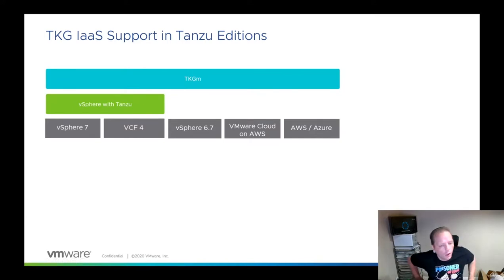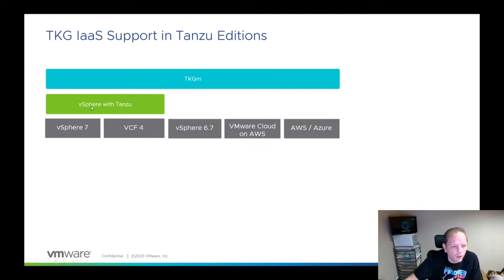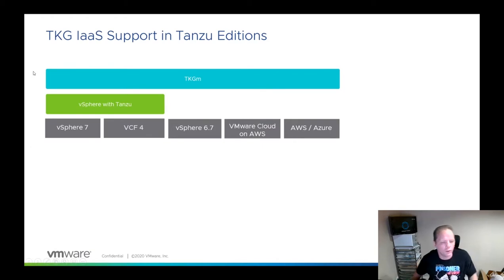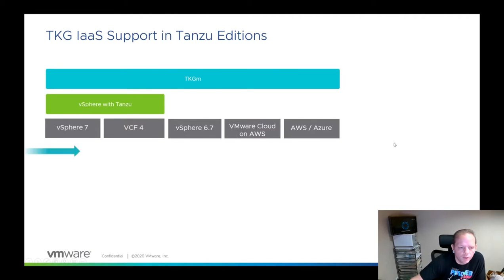There's not really any disadvantage to choosing vSphere with Tanzu — you don't save money by choosing to license with TKGm, as they're both licensed the same way. So it generally makes sense to use vSphere with Tanzu, but if you need TKGm for a specific reason or use case, that is an option.